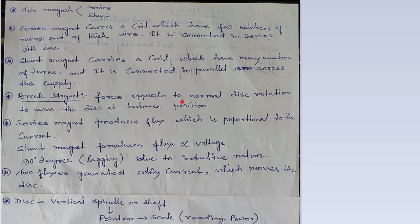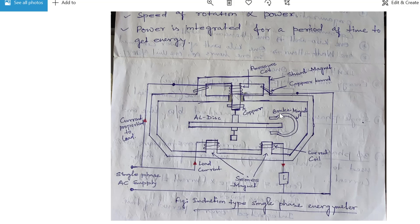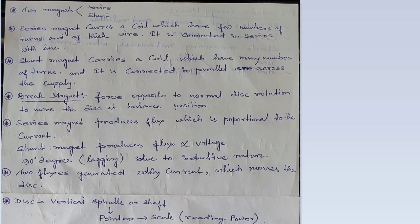Brake magnet: force opposed to normal disk rotation to move the disk at balance position. Yehaan pe jo brake magnet use hua hai, yeh ek permanent magnet hota hai. Aur iska kaam kya hota hai? Yeh balance karne ke liye use hota hai. Jab disk ghoomega, yeh continuously ghoomta raha rega. Isko balance kaun karega? Yeh brake magnet.